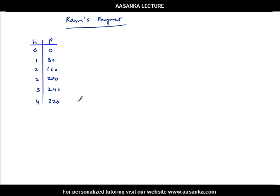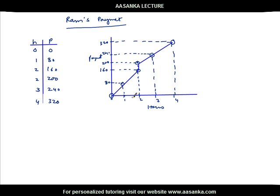Now if we plot this on a graph, you will see something very unique. For 0 hours: 0. For 1 hour: 80. But for 2 hours you will see 2 values — 160 and 200. For 1 independent variable there are 2 dependent values. This is not a function, because for 1 independent variable (hours) we are getting 2 dependent variables — and that should never happen. If you draw a vertical line on the graph between independent and dependent variables, that line must cut the graph at exactly 1 point for it to be a function. Here it cuts at 2 points, therefore this kind of data is not a function.